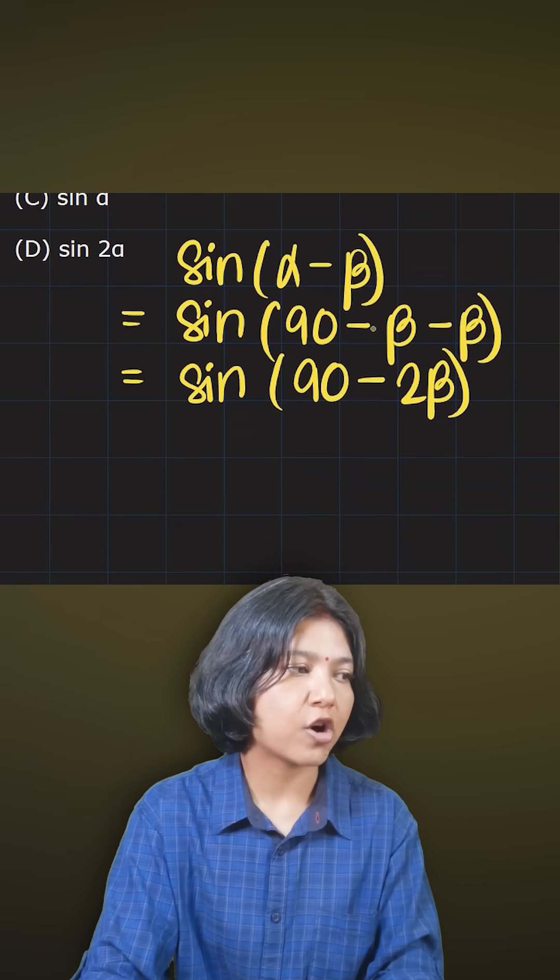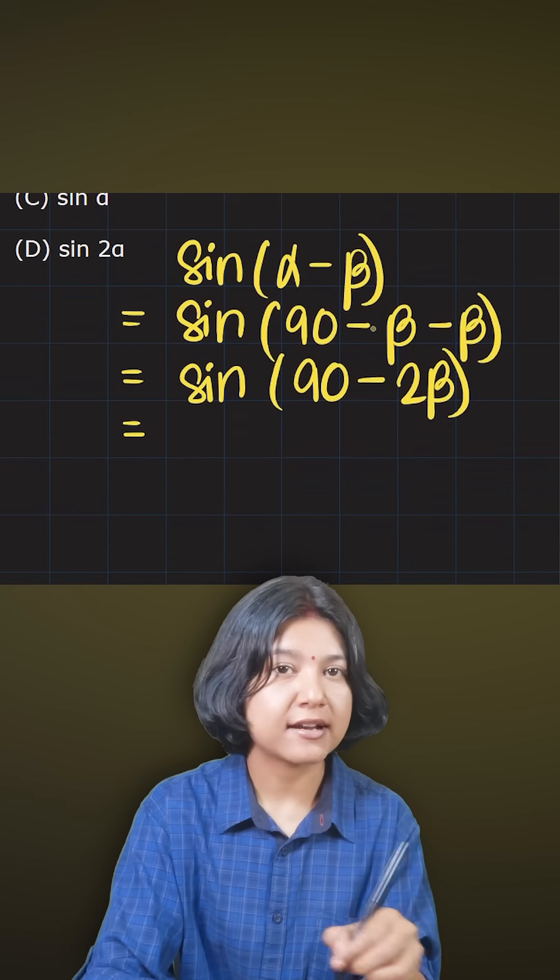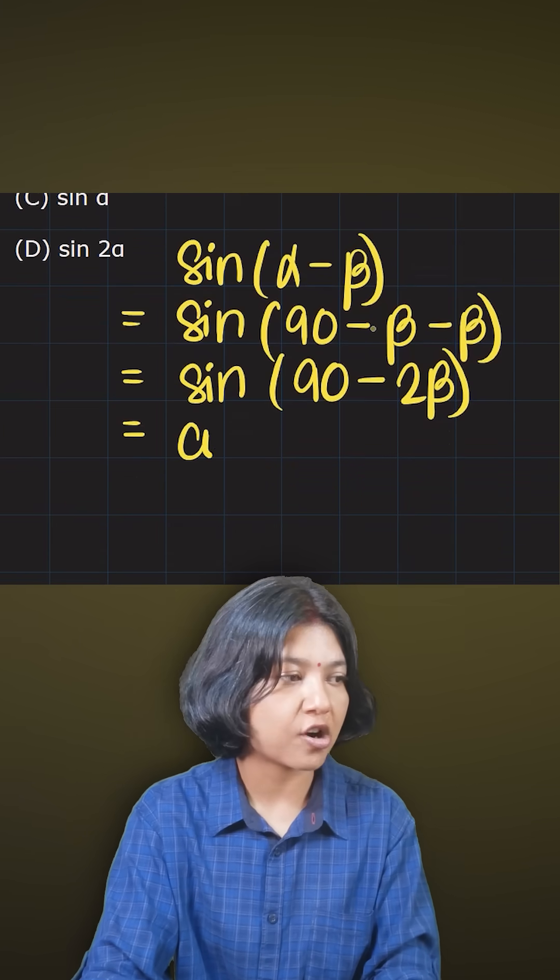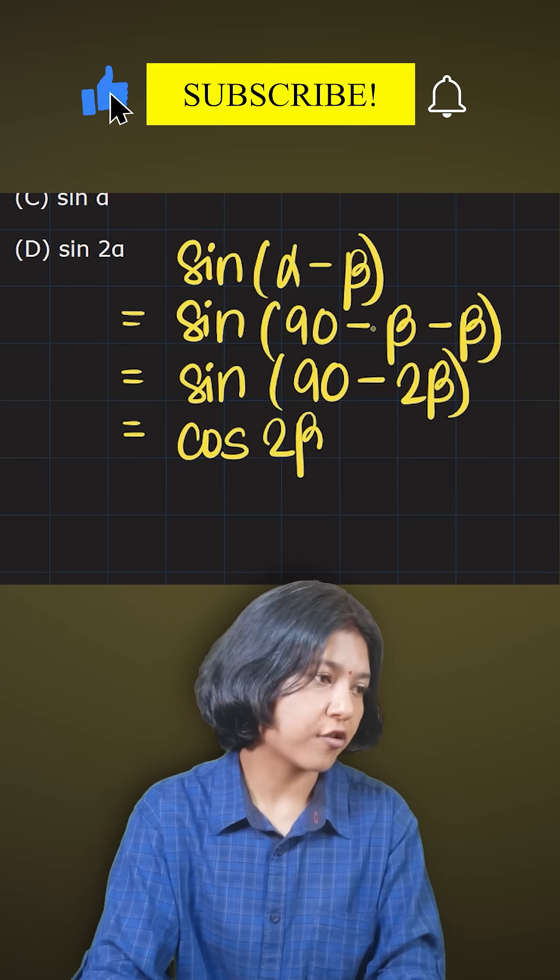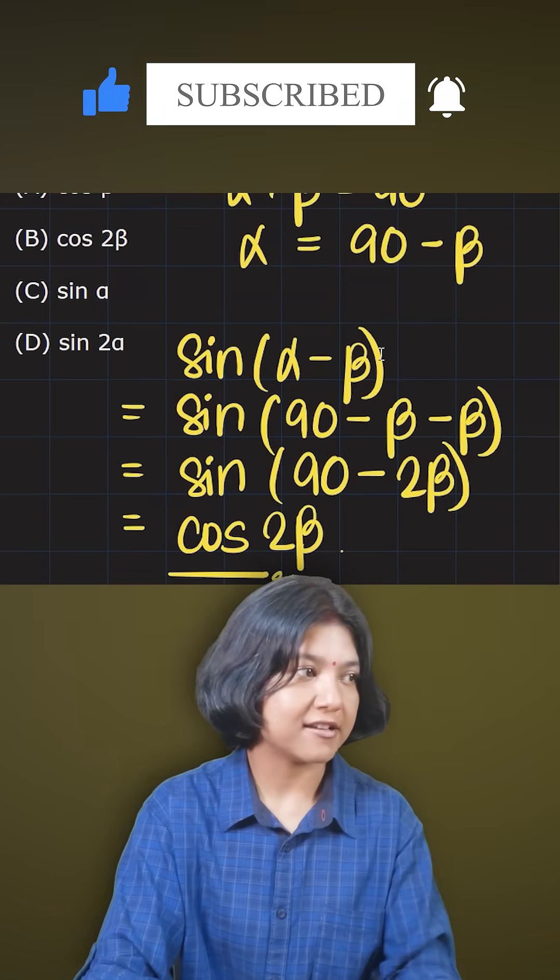Now this is in the form of sin(90 - θ). sin(90 - θ) is cos θ, so this becomes cos 2β. Therefore, the answer is cos 2β. That's it.